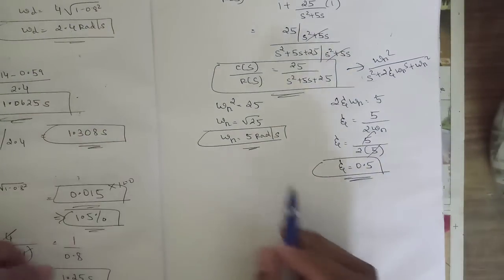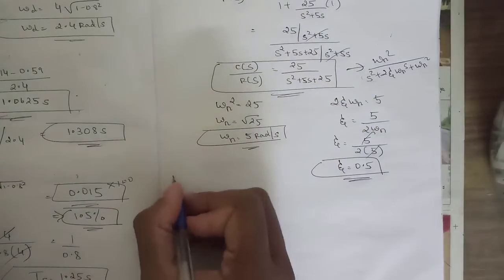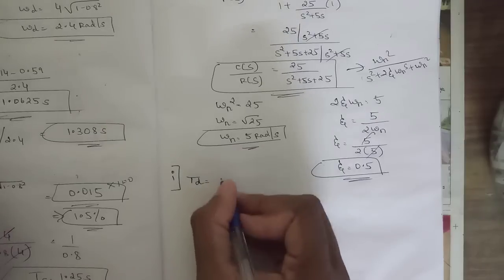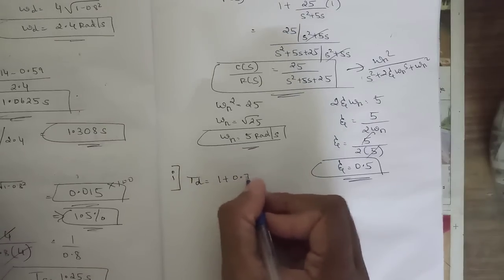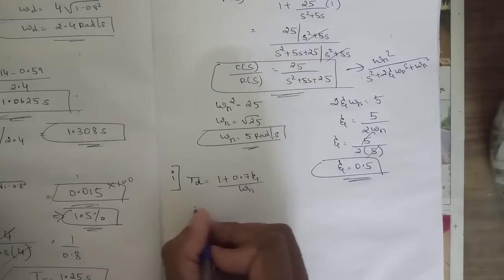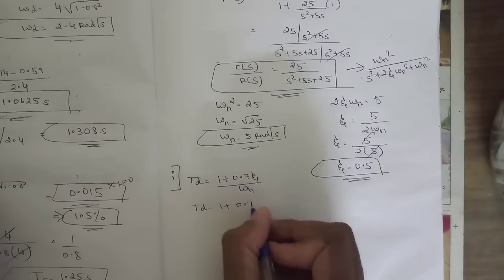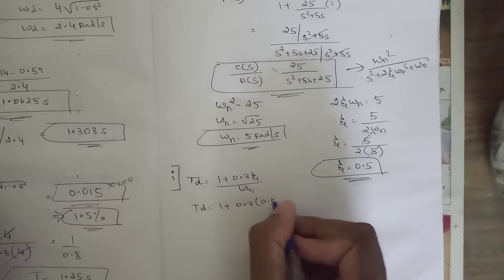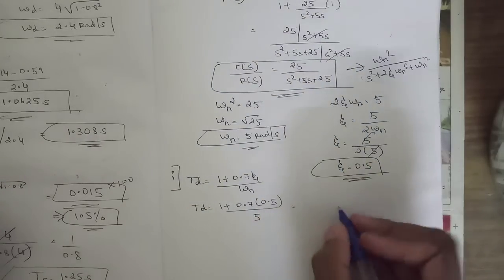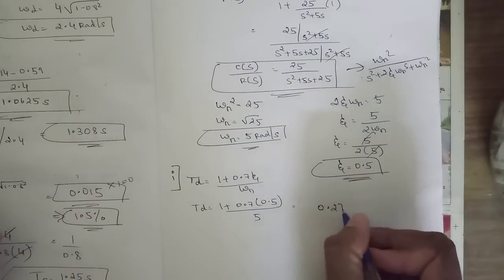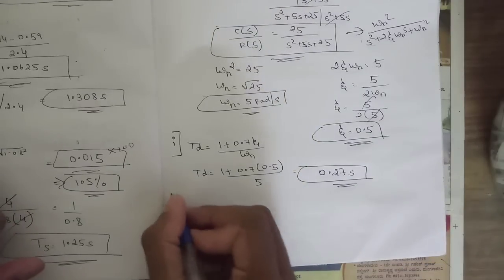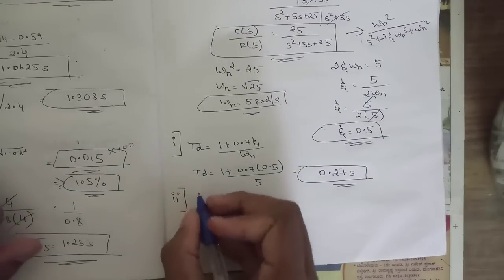With ωn=5 and ζ=0.5, we find all time domain specifications. First, delay time td: formula is (1 + 0.7ζ)/ωn = (1 + 0.7×0.5)/5 = 1.35/5 = 0.27 seconds. Next we find rise time tr using the formula (π − θ)/ωd.